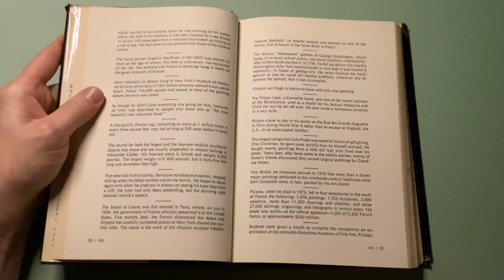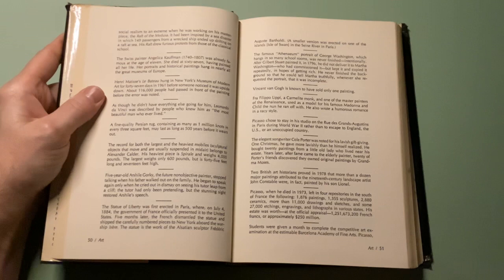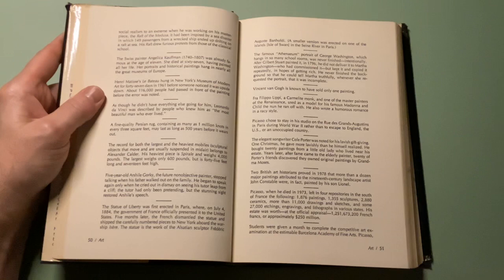Two British art historians proved in 1978 that more than a dozen major paintings attributed to 19th century landscape artist John Constable were, in fact, painted by his son Lionel.